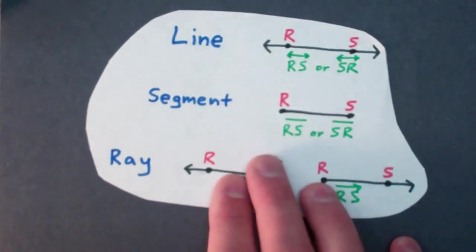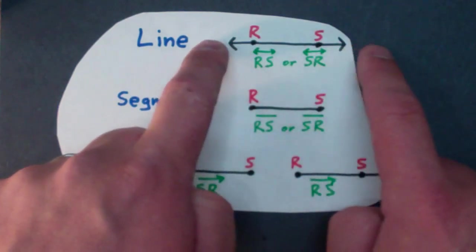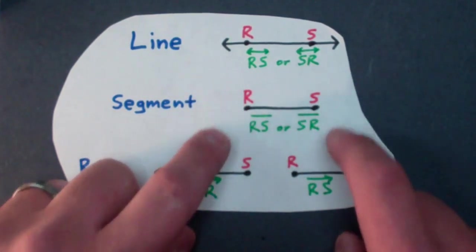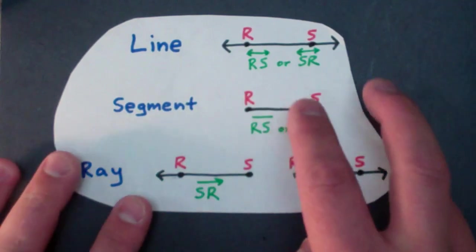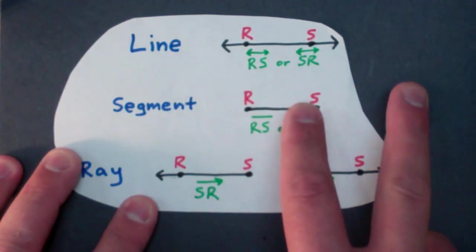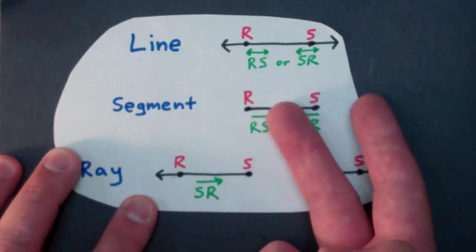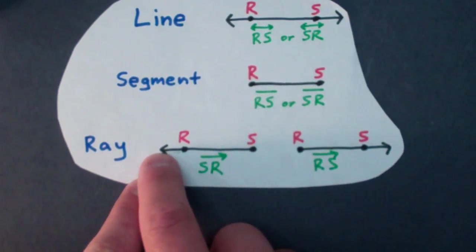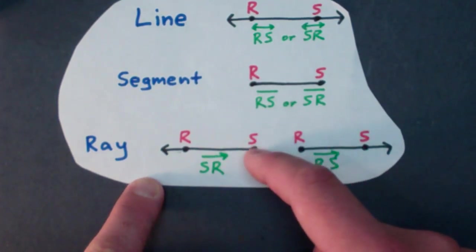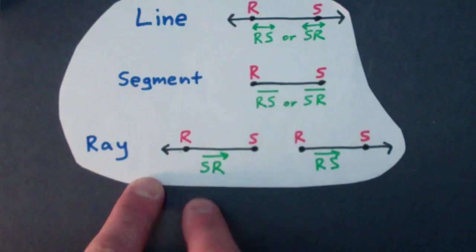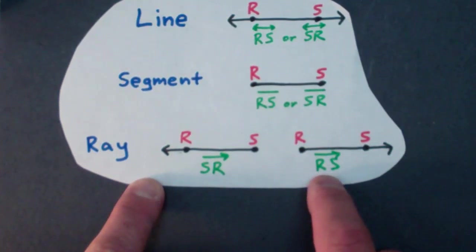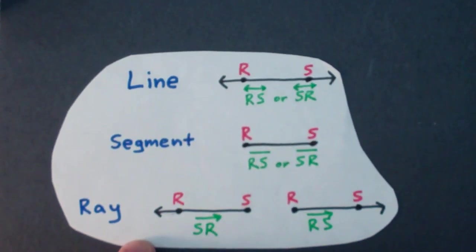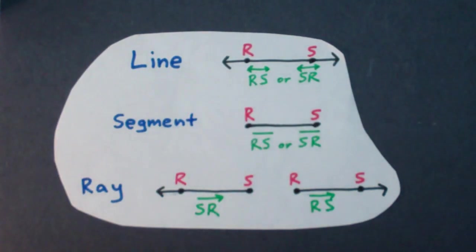So just to review all three of these because it can get kind of confusing. A line has infinite length and it has two arrows on the picture. So you're going to have two arrows on the symbol. A segment has no arrows. So the symbol has no arrows. There are two ways to name a line. Two ways to name a segment. You can swap the points in the line. You can swap the end points on the segment. But for a ray, there's only one way to name a ray. This one here has one arrow. The symbol has one arrow. The end point is S and it travels through R. So this would be ray SR. Or right here, the end point is R and it travels through S. So this is ray RS. This is the only way to name this ray. So hopefully, you have a better understanding of line, segment, and ray.